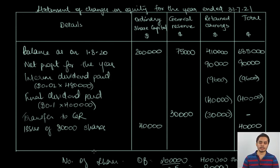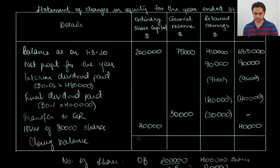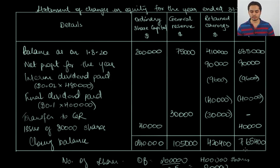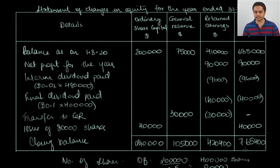Now let us calculate the closing balances for all elements of equity and the total column. The totals are: ordinary share capital $240,000; general reserve $105,000; retained earnings $420,400; and the total of all elements of equity $765,400. These values will be used in the presentation of the equity section in the balance sheet.